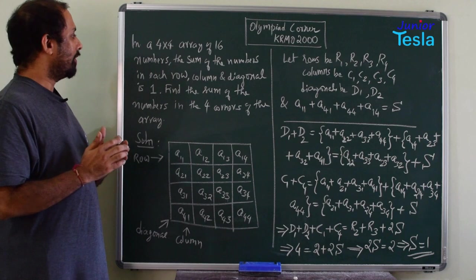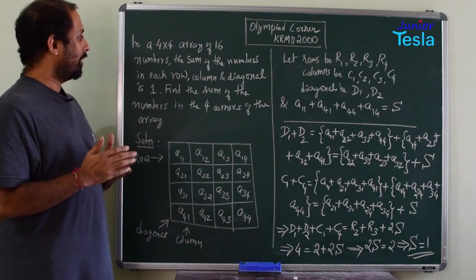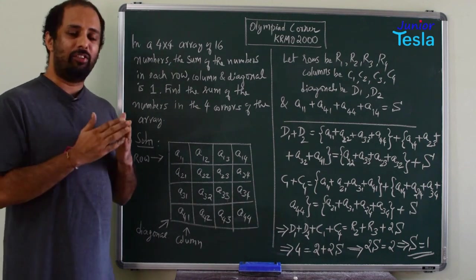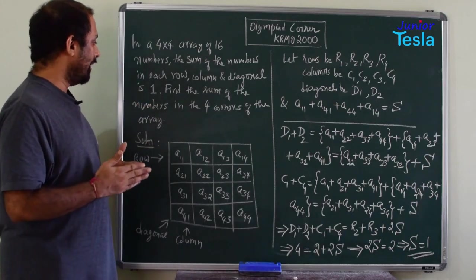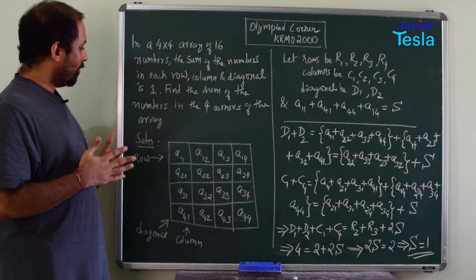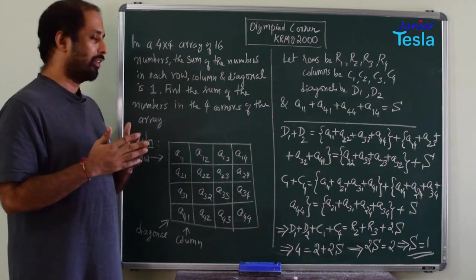In a 4 by 4 array of 16 numbers, the sum of the numbers in each row, in each column and in each diagonal is 1. Find the sum of the numbers in the 4 corners of the array.